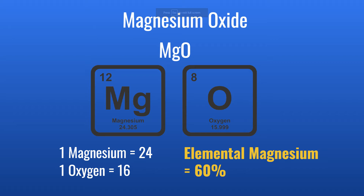Technically the elemental oxygen, which makes up the rest, is 40 percent. So magnesium oxide is actually quite high in elemental magnesium — it's mostly magnesium by weight. But the problem, as we'll see, is that it doesn't absorb very well.